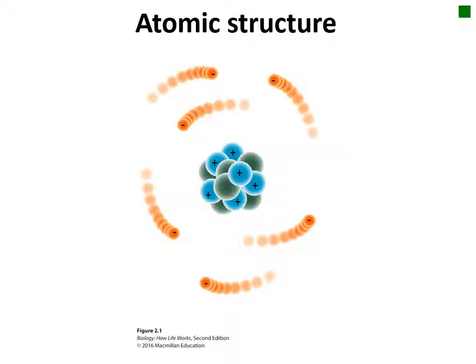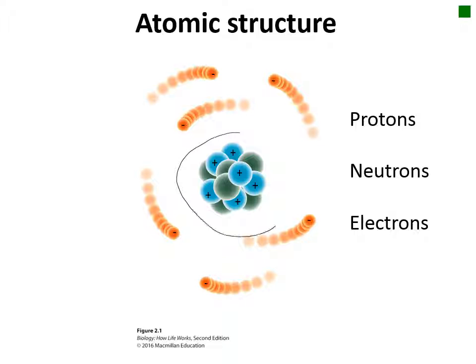Atoms are made of three main components — protons, neutrons, and electrons — which determine their chemical properties. Atoms contain a dense nucleus. You can see in the figure that the nucleus is composed of blue and green balls: the blue represent the protons with a positive charge, while the green represent neutrons and are neutral. The third component, electrons, are much smaller than protons or neutrons and form a cloud around the nucleus, associated with a negative charge.